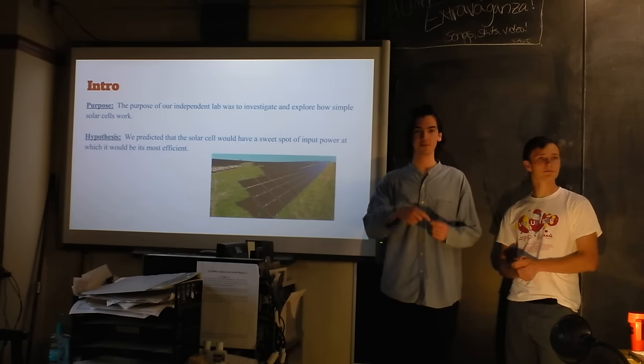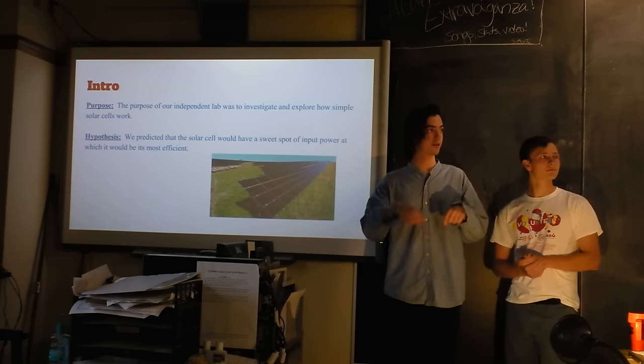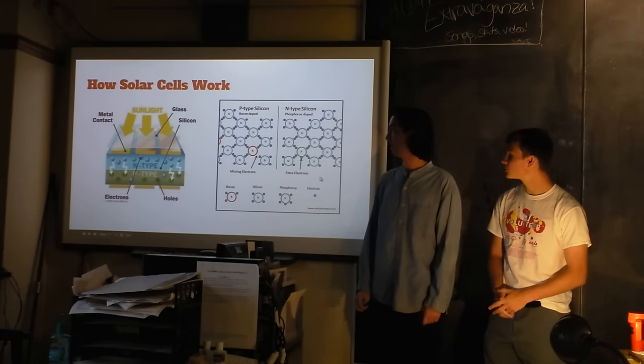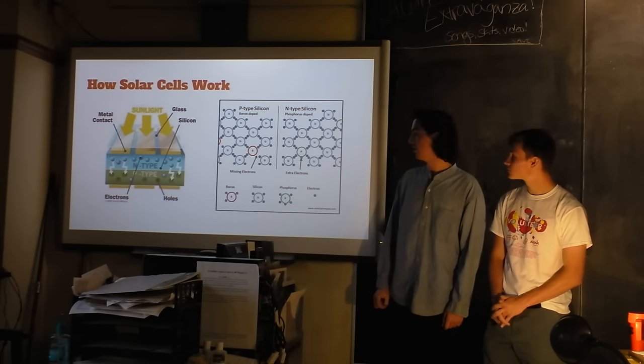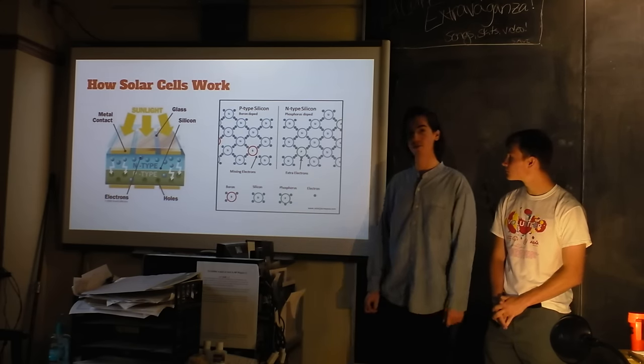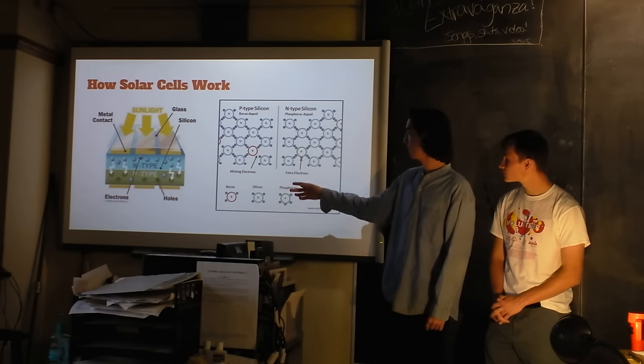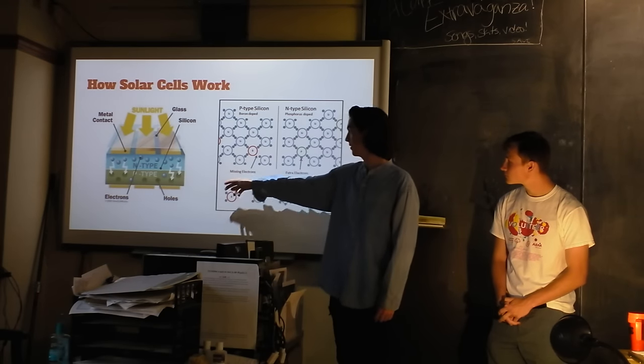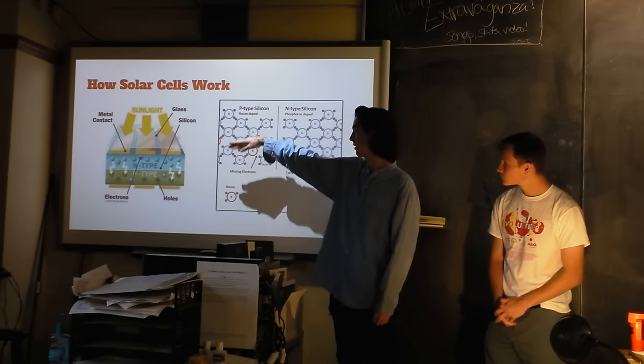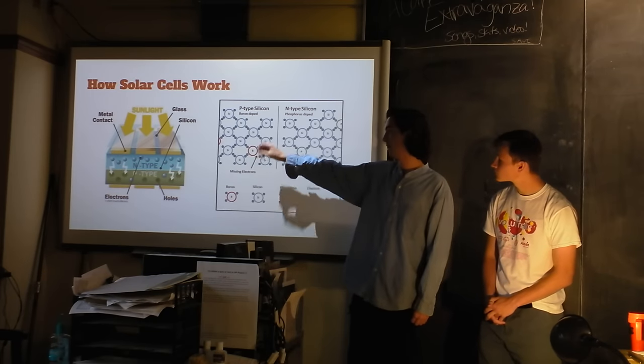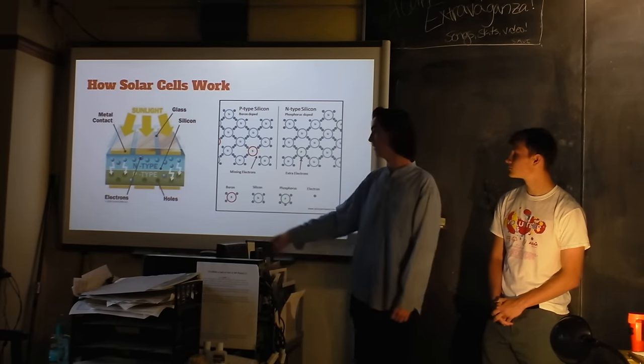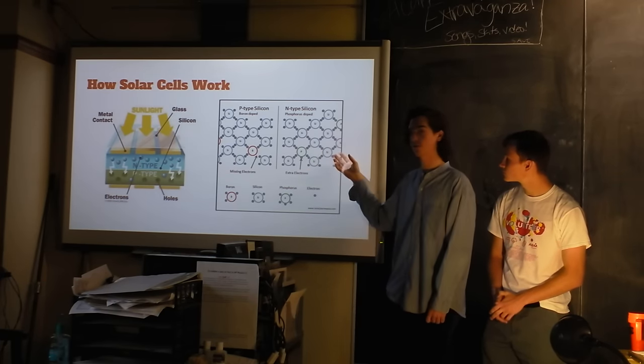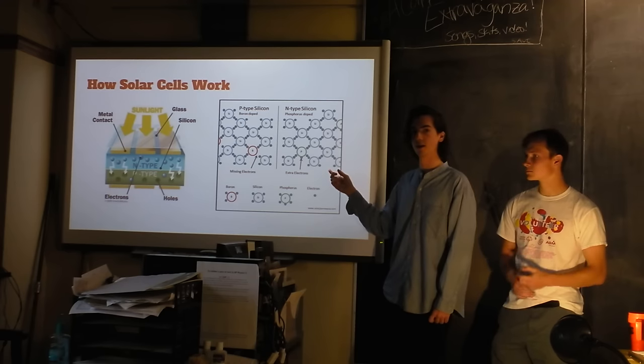So we ran a voltage through the solar cell and measured the voltage of the current to get the power. And this is just a little bit how solar cells work. Basically, in this p-type solution, there's a missing electron, or an electron hole. And so when the sunlight comes through, it excites the n-type and the electrons shift and that creates a current, filling the holes in the p-type. And usually, silicon is the most commonly used in solar cells, but you can use other elements.